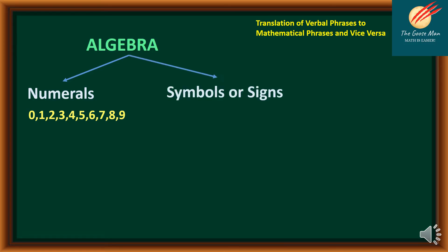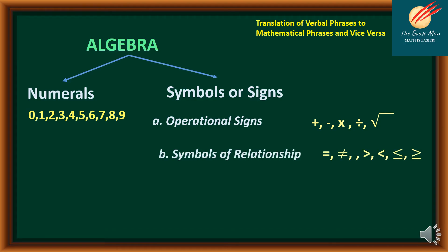On the other hand, algebra is composed of symbols or signs. First are operational signs such as addition, subtraction, multiplication, division, and the root. As well as symbols of relationship, which include equal, not equal, greater than, less than, less than or equal to, and greater than or equal to.